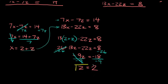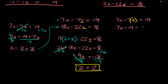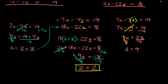We found one of our answers: z is equal to 2. Now we plug z back into one of the two-variable equations to solve for x. Using the first one: 7x minus 7 times 2 equals 14, so 7x minus 14 equals 14. Adding 14 to both sides gives 7x equals 28, and dividing by 7 gives x is equal to positive 4.